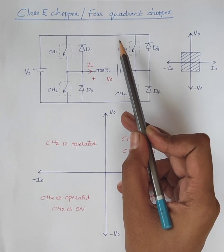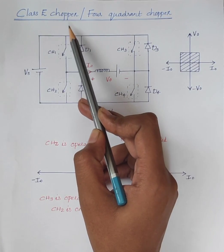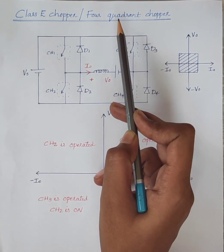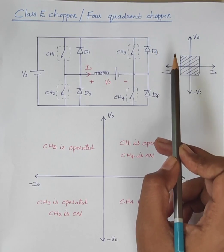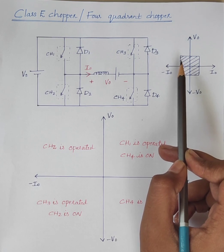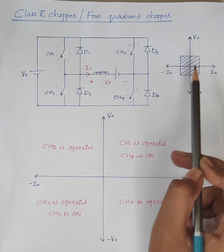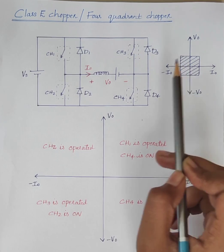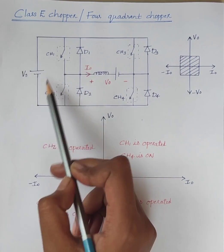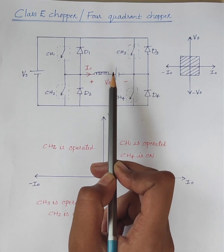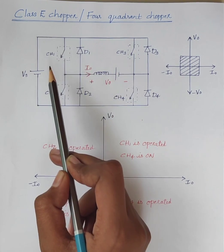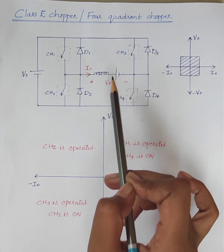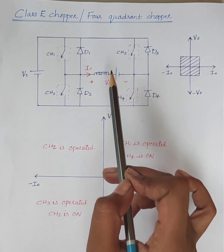Hello students. Today we will discuss the class-D chopper, also known as the four quadrant chopper. A four quadrant chopper can operate in all four quadrants. Therefore, the power can flow either from source to load or from load to source. The circuit diagram of the four quadrant chopper is shown here.